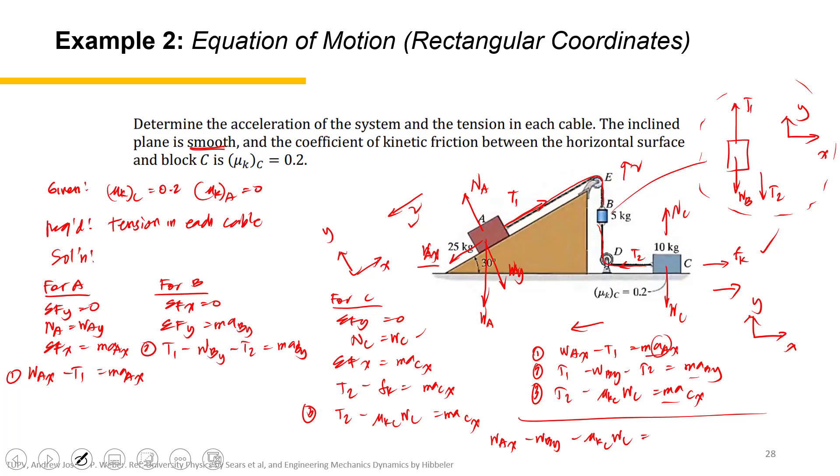But to simplify further, the acceleration a_A, a_B, and a_C are just equal because they are connected. So I'll just write a outside and write M_A, M_B, and M_C. So it will be M_A plus M_B plus M_C, because the acceleration of these bodies are just the same. So what can we get from here? It's the acceleration. Because W_Ax, W_By, mu_K_C, W_C, and the masses of all the objects or bodies are given. So we can solve for a.